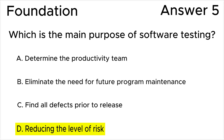All the rest of the answers are incorrect. Answer A — determine the productivity of the team — relates to management. Answer B — eliminate the need for future program maintenance — is related to maintenance.